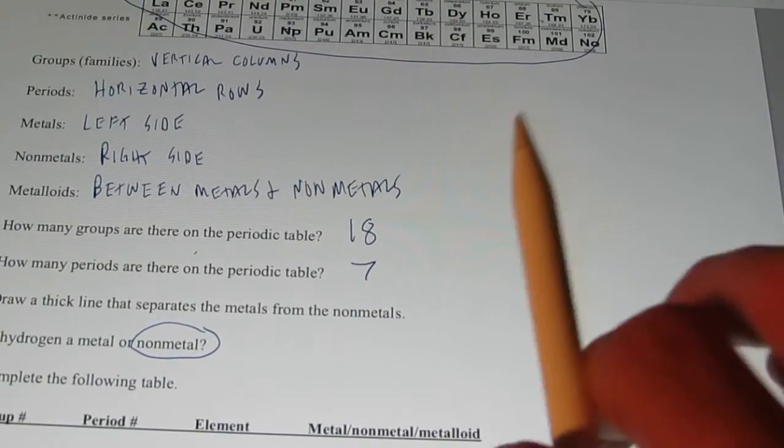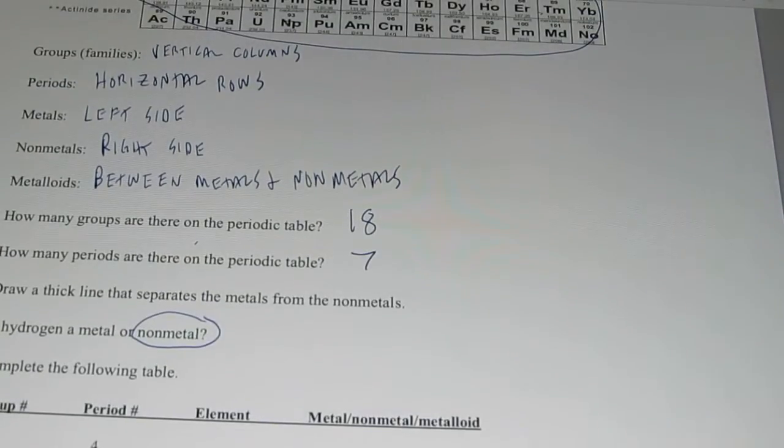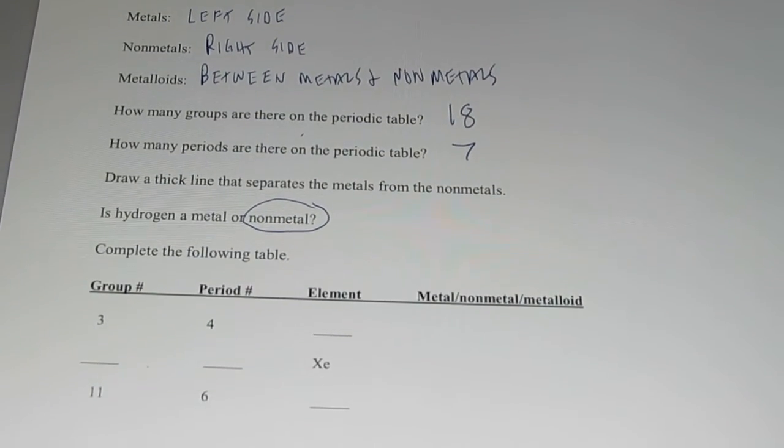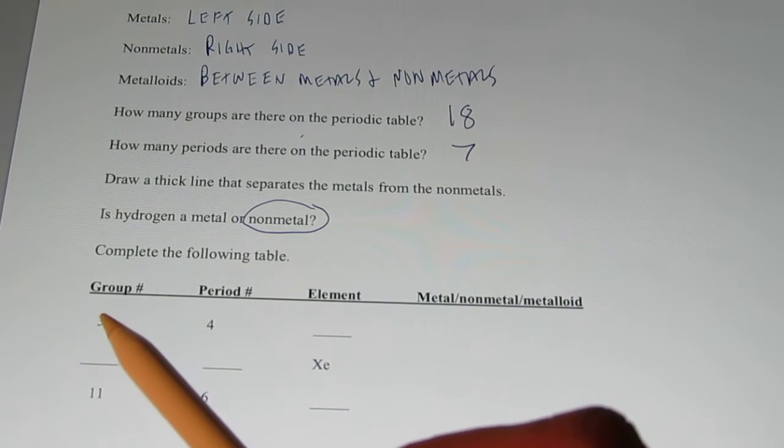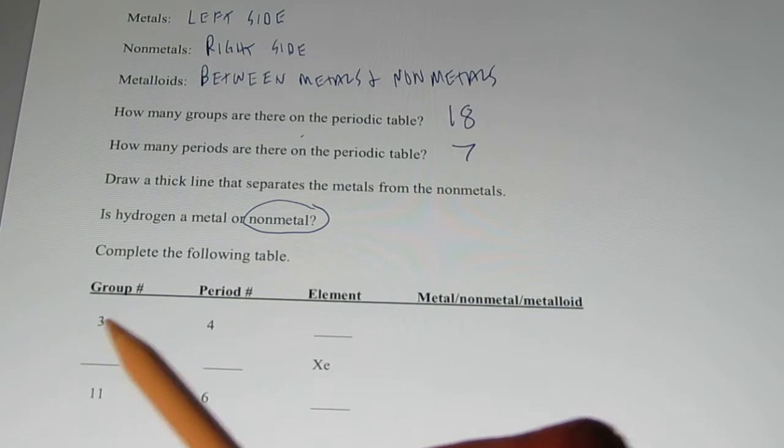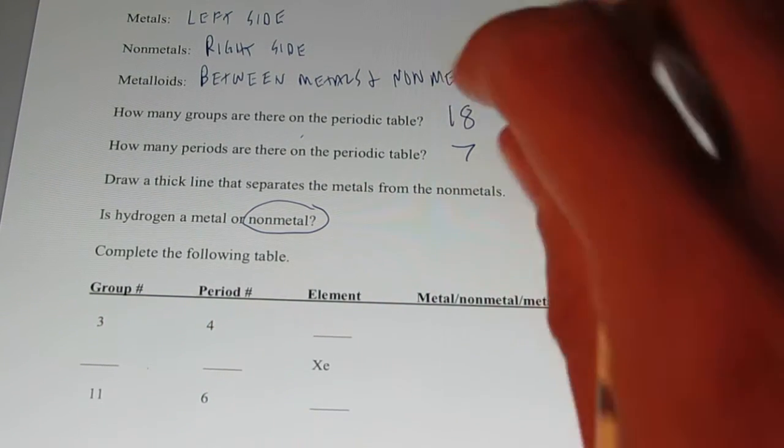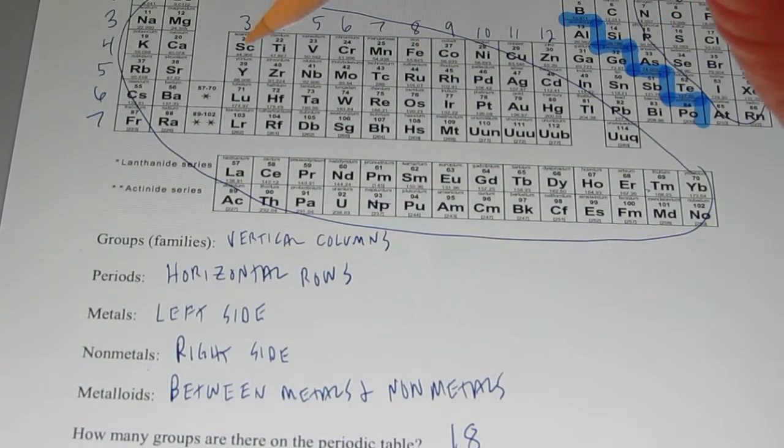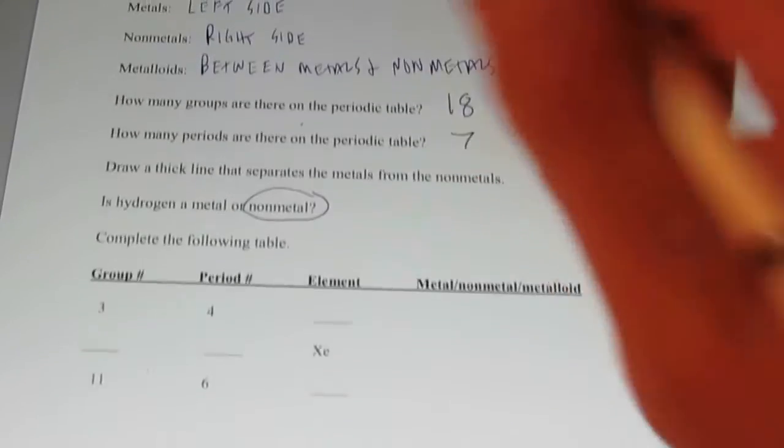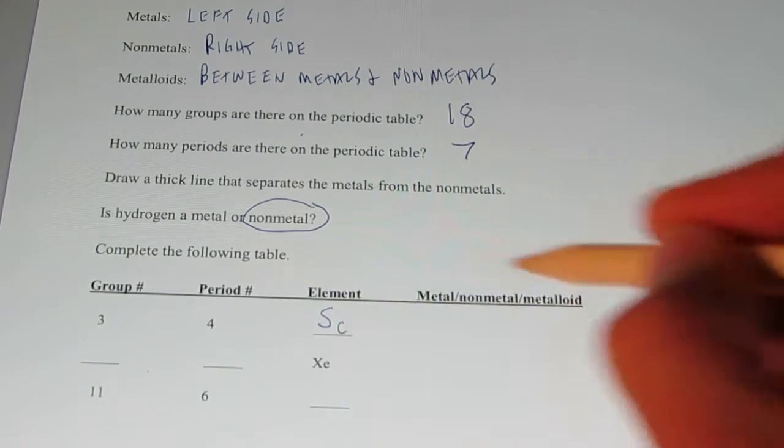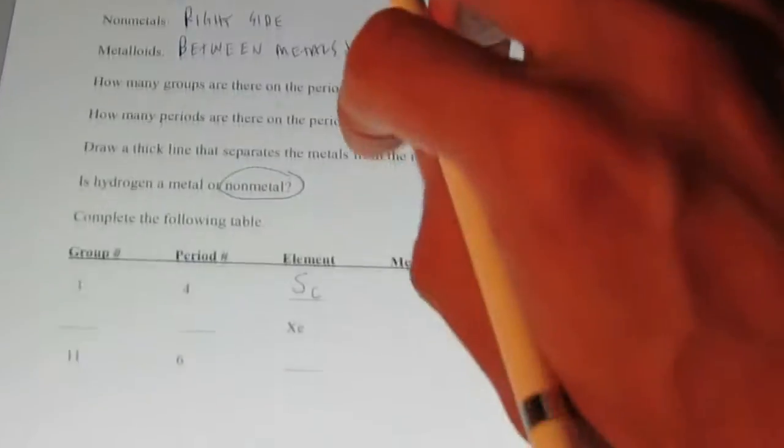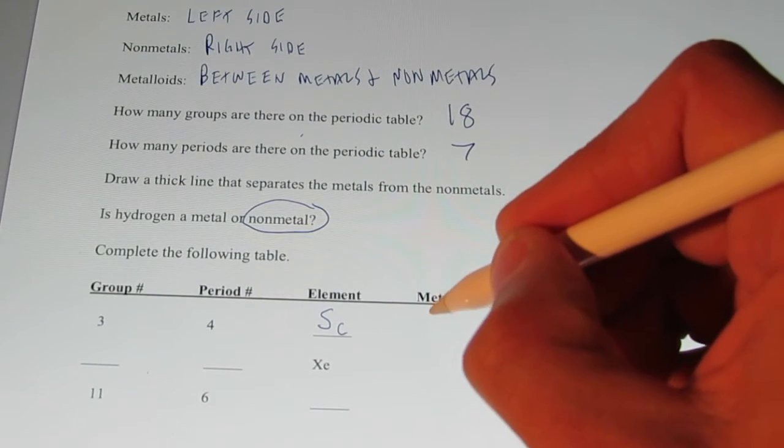Alright. Let's just complete this table at the bottom of this page of your notes by looking at our periodic table. So, if I wanted to find the element in group number three, period number four, let's take a look. Group number three, one, two, three, period number four, that would be right here, SC scandium. So, the element is SC, and let's see, it's on the left-hand side of the periodic table, so I would call that a metal.